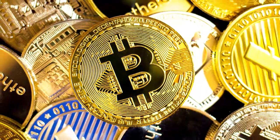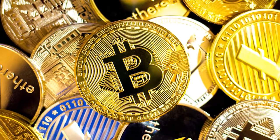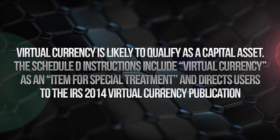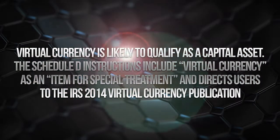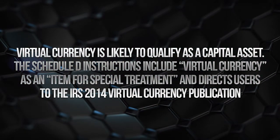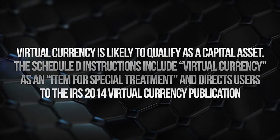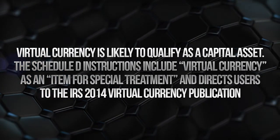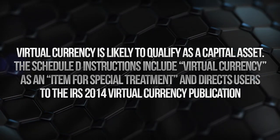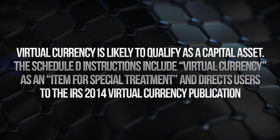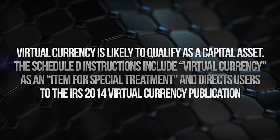Form 8949 is used to report the sale or exchange of capital assets. Virtual currency, like I said earlier, is most likely to qualify as a capital asset. The Schedule D instructions themselves already include virtual currency as an item for special treatment and direct people back to IRS 2014 virtual currency publication, IRC REV PROC 2014-16.